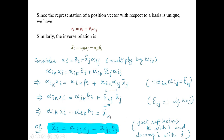Just replacing k with i, we get the relation: XI-tilt is equal to alpha-ji Xj minus alpha-ji beta-j. So if you know a point's coordinates in the non-tilt system and have the transformation matrix and the origin's coordinates in the tilt system, you can transform to the tilt system.